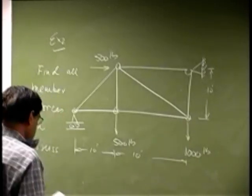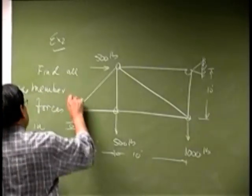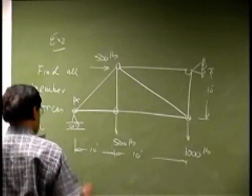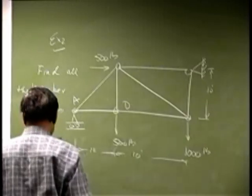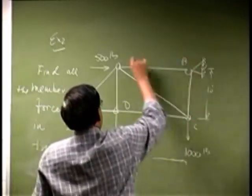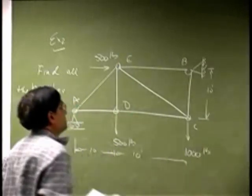So the first thing we do is again we number the joints. I am going to call this as joint A, then we call this as joint D, then we call this as joint C. Call this as joint B and call this as joint E.